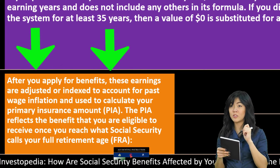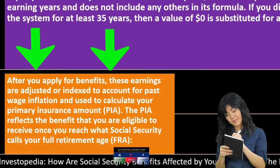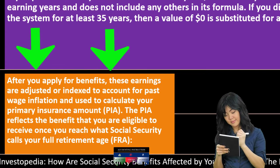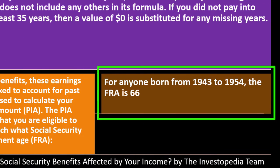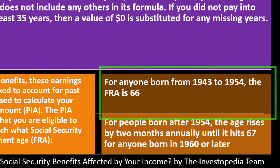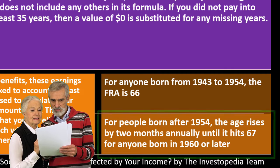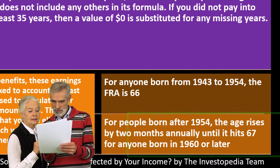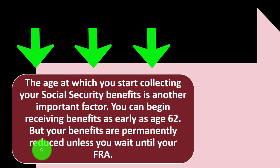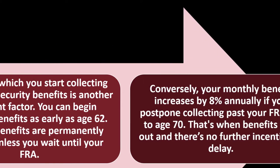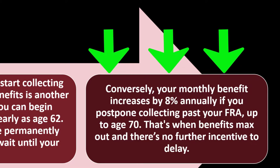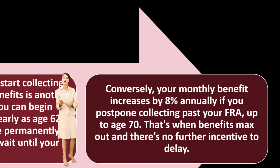The PIA reflects the benefit you are eligible to receive once you reach your Full Retirement Age (FRA). For anyone born from 1943 to 1954, the FRA is 66. For people born after 1954, the age rises by two months annually until it hits 67 for anyone born in 1960 or later. You can begin receiving benefits as early as age 62, but your benefits are permanently reduced unless you wait until your full retirement age.